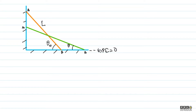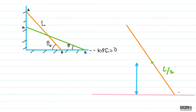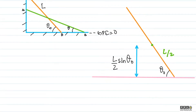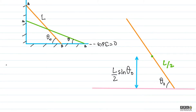As shown: at angle θ₀, the rod of length L has its center at height L/2·sinθ₀ from the ground. So the initial potential energy is MgL/2·sinθ₀. Since the rod is released from rest at this position, the initial kinetic energy is zero.